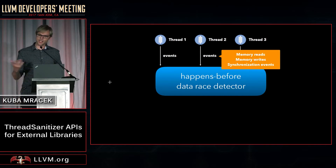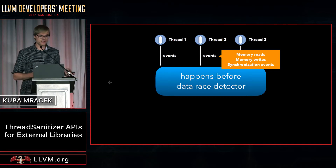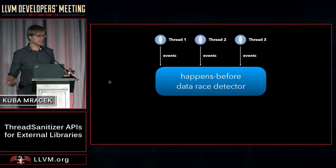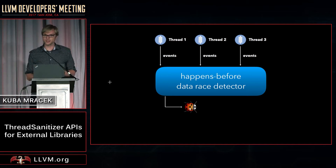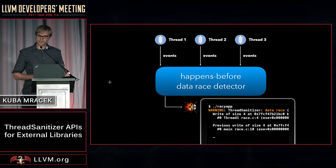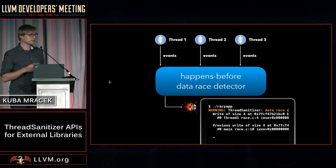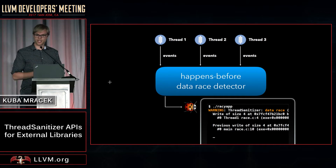Those events are memory reads, memory writes, and synchronization events, which is pretty much all we need to be able to detect data races. When we detect that, it's a bug, because there's no such thing as a benign race, of course. And we will display a report about the bug, most importantly including the locations of the two racy memory accesses.